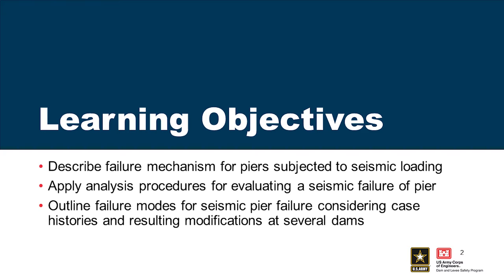Going back to the beginning slide, just to show the piers we're talking about — typically on spillways for dams, it could be on top of a concrete dam or over in the abutment of an embankment dam. A key thing to consider is that you have to have water above the spillway crest for a failure to result in an uncontrolled release of the reservoir. A lot of flood control dams may not have water on the crest unless it's a flood, and we don't want to combine two unusual extreme events.